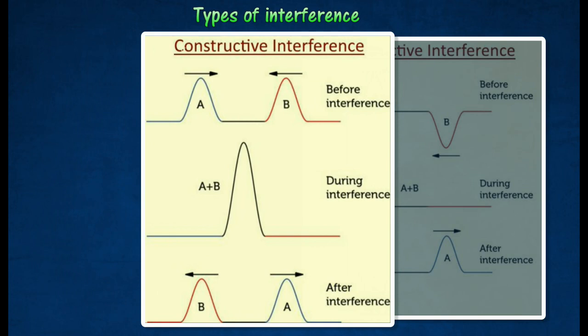Constructive interference occurs when the crests, or highest points, of one wave overlap the crests of the other wave as shown in the diagram. As the waves pass through each other, the crests combine to produce a wave with greater amplitude.